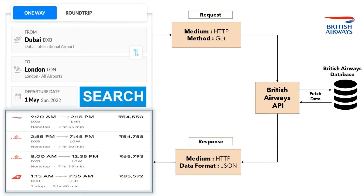Now let us see how the online booking platform communicates with the Airlines API to get the data of their available flights. Here we will consider British Airways API as an example. When the user searches for flights from Dubai to London on 1st May 2022, this request is sent to the British Airways API through a medium called HTTP and by a method called GET. HTTP is a medium through which data can be exchanged between a client and the API. Here, the client is the online platform. The method is used to perform operations on the data. There are four main methods widely used: POST, GET, PUT, and DELETE.